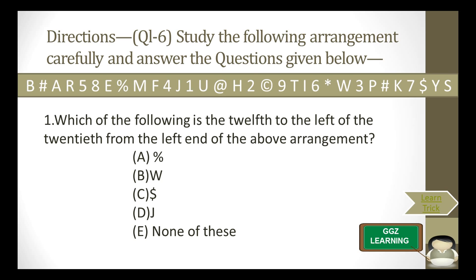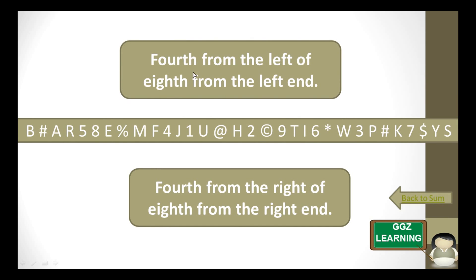First, what they have given is: which of the following is the 12th to the left of the 20th from the left end of the above arrangement? To find this, we need a shortcut. For example, consider: 4th from the left of 8th from the left end. We find the 8th element — 1, 2, 3, 4, 5, 6, 7, 8 — and then count 4 to the left of that element: 1, 2, 3, 4. So R is the answer.